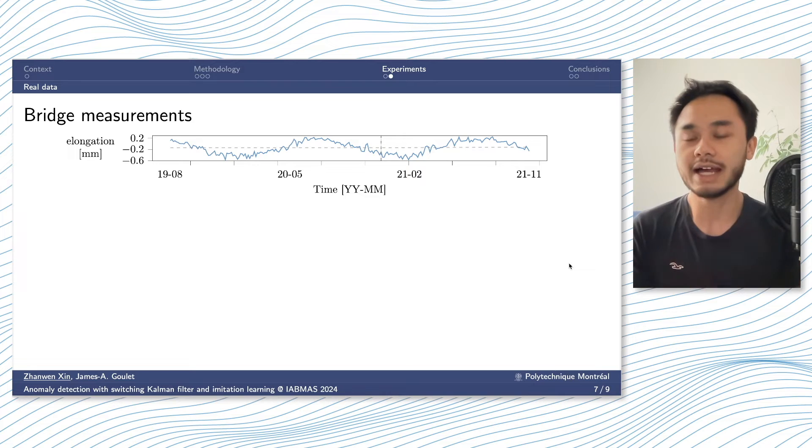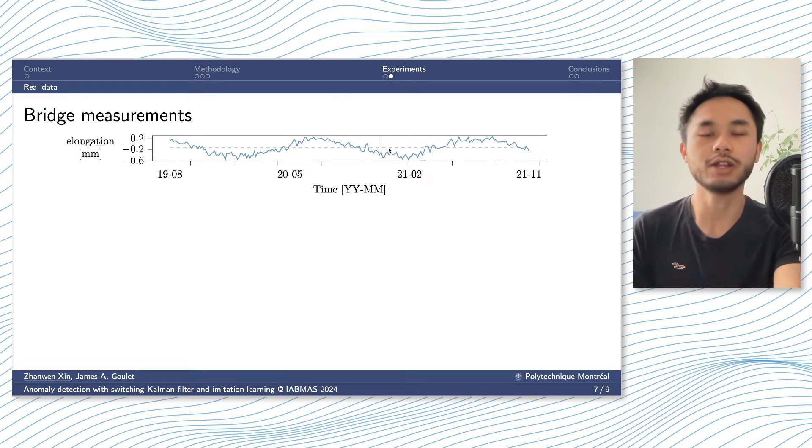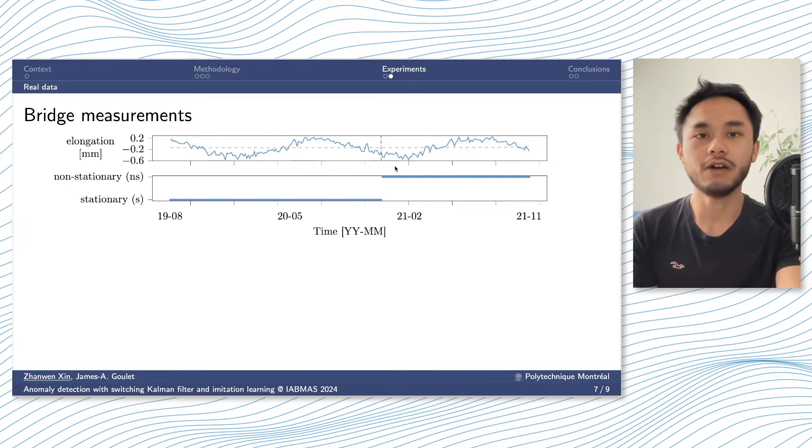And we also test our IL agents on a real-time series that measures the elongation on a bridge in Montreal. The original raw time series is assumed to be anomaly free because we know nothing happened on the bridge during this period from 2019 to 2021. And on top of the original raw time series, I add a very small anomaly on it that shifts the baseline, the speed, from a constant speed to another. And here, with our eyes, it's hard to identify it because the anomaly is super small. And these are the labels of the measurements.